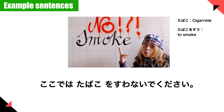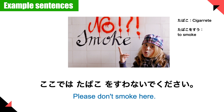Alright, this time a little longer sentence: ここではタバコを吸わないでください — please don't smoke here. ここでは means 'just here.' タバコ means 'cigarette,' and タバコを吸う means 'to smoke a cigarette.' So ここではタバコを吸わないでください — please don't smoke here.